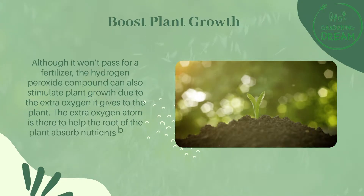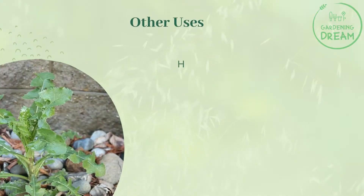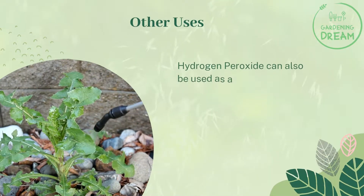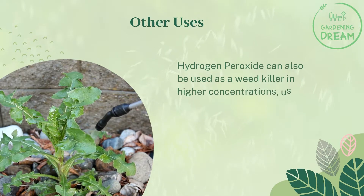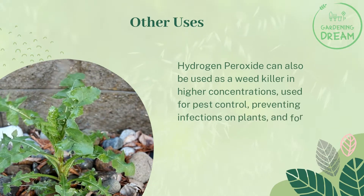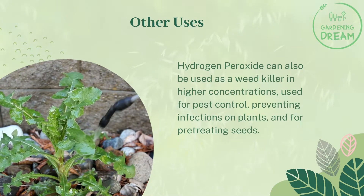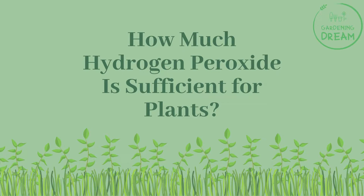The extra oxygen atom helps the roots of the plant absorb nutrients better from the soil. Other uses include: using hydrogen peroxide as a weed killer in higher concentrations, for pest control, preventing infections on plants, and for pre-treating seeds.